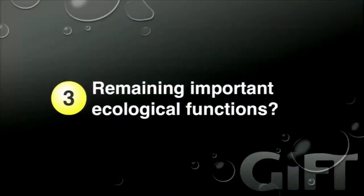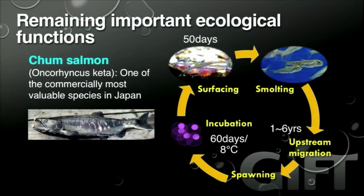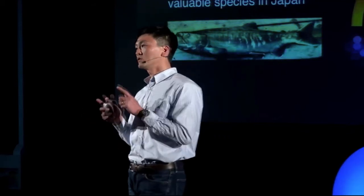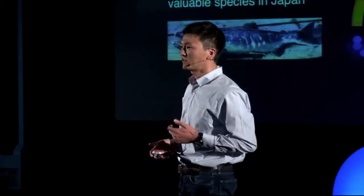The third example is about a commercially valuable species: salmon. This is the life history of salmon — they hatch from eggs in rivers, migrate down to the ocean, spend several years there, then come back to lay their eggs again. The incubation period of eggs is critical for their life cycle, and the water temperature environment is critical for their successful development.